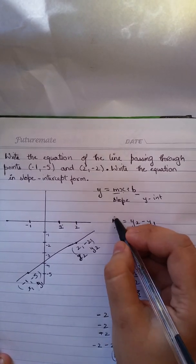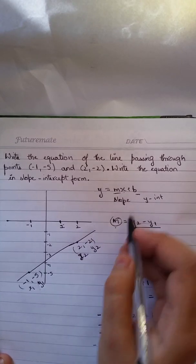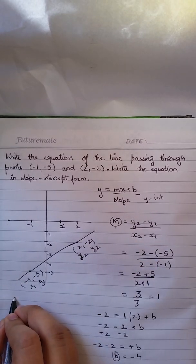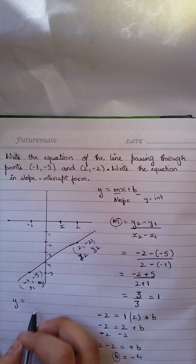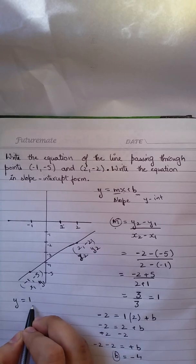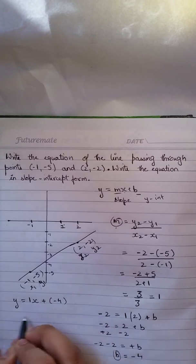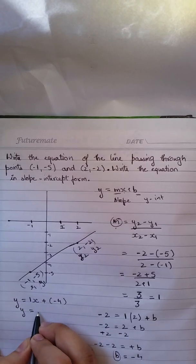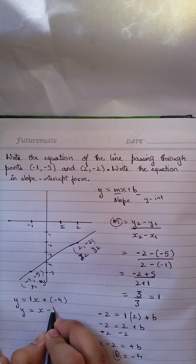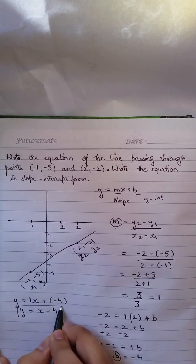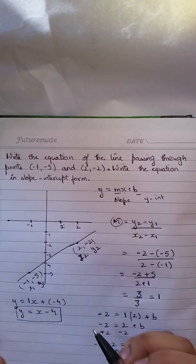Now I'll plug my b and m in the equation. So I'll get y equals m which is 1 times x plus my b which is -4. So y equals x minus 4. So this is the equation for this line.